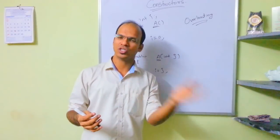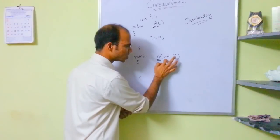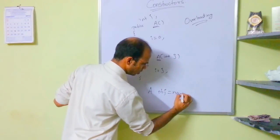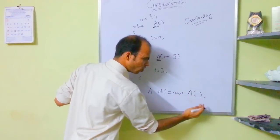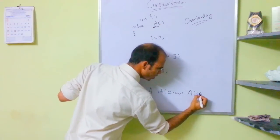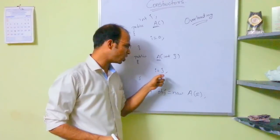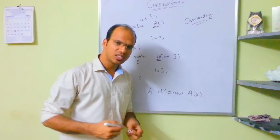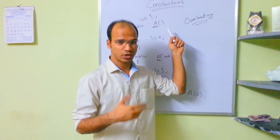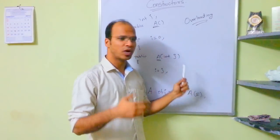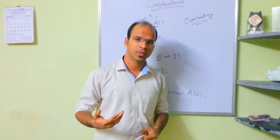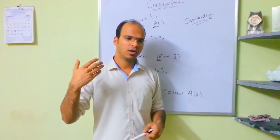How do you call these constructors? You cannot call a constructor yourself by saying obj.constructor. To call a constructor you have to create an object — whenever you create any object, the constructor gets automatically called. So: A obj = new A() calls the default constructor, and A obj = new A(5) calls the parameterized constructor, setting i to 5. You can have a zero-parameter constructor, a one-parameter constructor, or multiple parameters.